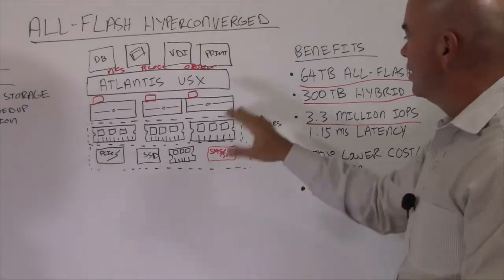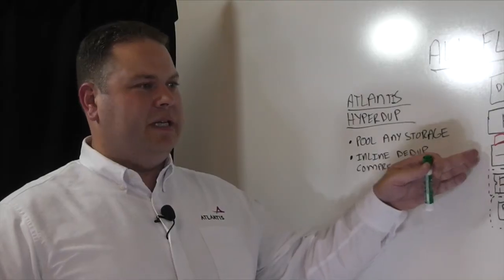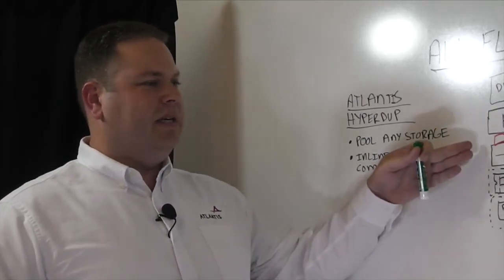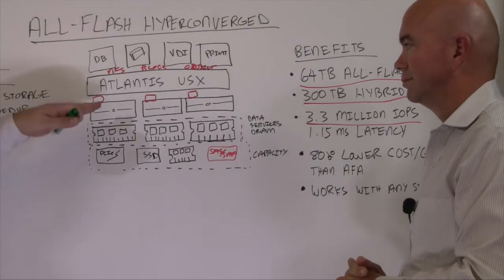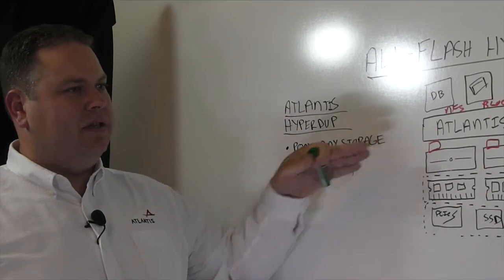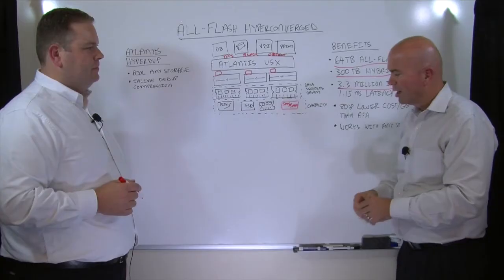So let me throw you a curveball. In those tests, what was the network that connected these different servers? Yeah. So one of the requirements here is 10 gig networking. It doesn't have to be a dedicated 10 gig, but you do need 10 gig networking because after the deduplication and compression happens, the unique blocks get replicated for data protection across the nodes.